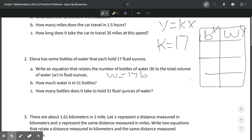The next part says, how much water is in 51 bottles? Well, for this one, this one's sort of simple. We know that we have 17 ounces in each bottle, and if we have 51 bottles, we just multiply that out. And if we multiply 17 times 51, we will find that that is equal to 867 fluid ounces. So that would be 867 fluid ounces of water is in 51 bottles.